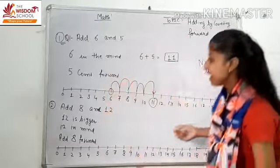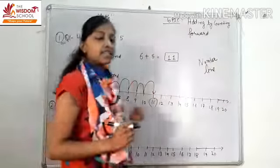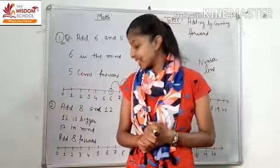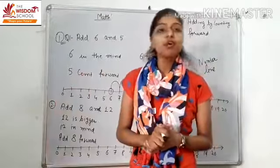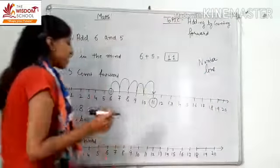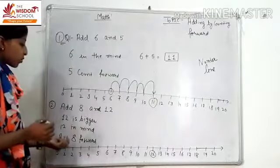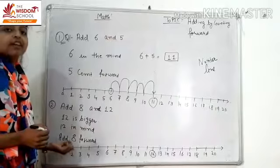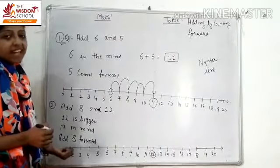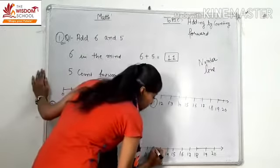Now let's do it with the number line. Mark twelve on the number line. Where is twelve? This one. Now how many jumps to take? Eight jumps forward.